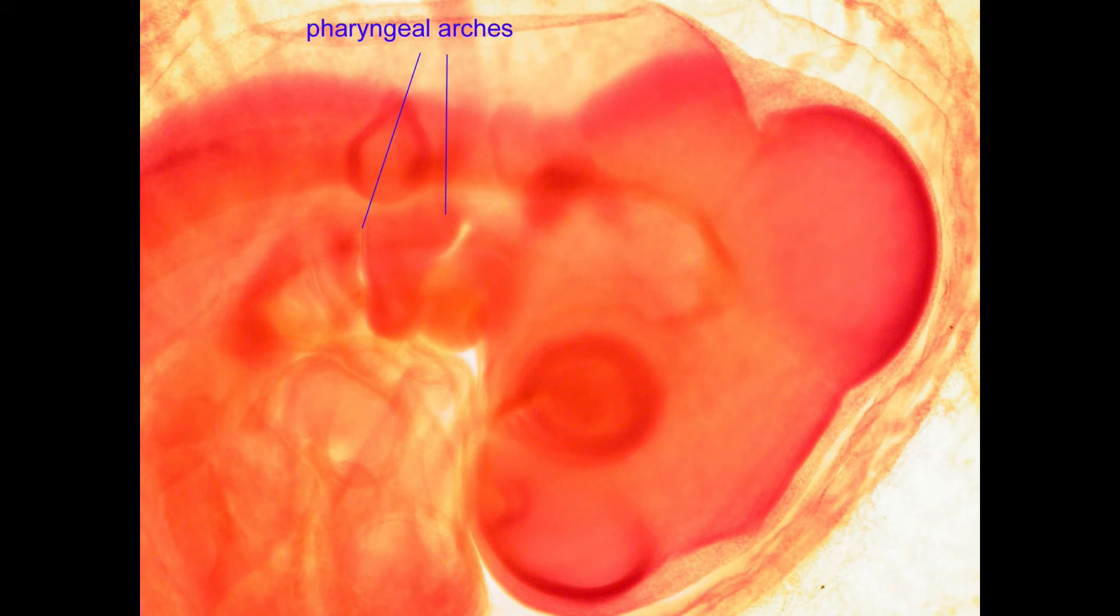One of the defining features of the chordates is a set of pharyngeal arches where in fish internal gills for respiration can occur. These are even present in the embryos of land vertebrates like this chicken.